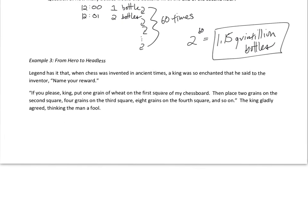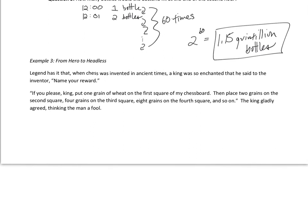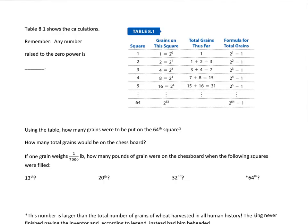Example three. From hero to headless. A legend has it that when chess was invented in ancient times, the king was so enchanted that he said to the inventor, name your reward. So the inventor said, if you please, king, put one grain of wheat on my first square of my chessboard, then place two grains on the second square, four grains on the third square, and so on. The king gladly agreed, thinking the man a fool. This question ends up being very much like the penny question we did a couple slides ago. So again, any non-zero number raised to the zero power is one. And this gets to the little formula I was talking about before.